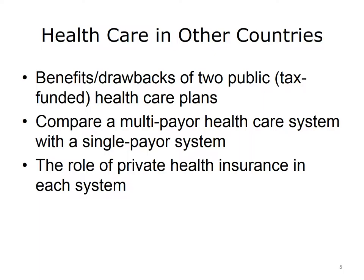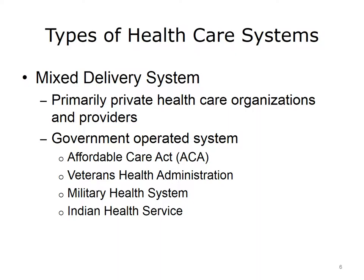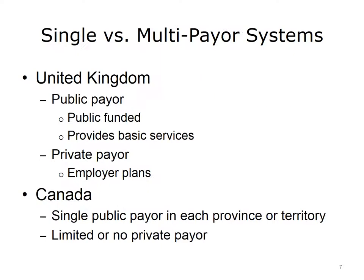It also discusses the role of private insurance in each of these tax-funded systems. Many countries provide government-paid basic healthcare services for their residents. These services are usually funded by general taxes, payroll taxes, or a combination of both. How this publicly-funded healthcare is structured and delivered varies from country to country. Privately purchased health insurance may also play a role in these public healthcare systems. As mentioned in Lecture B, the U.S. healthcare system is a mixed model of private healthcare organizations and government-operated systems.